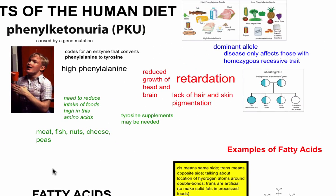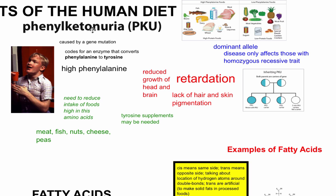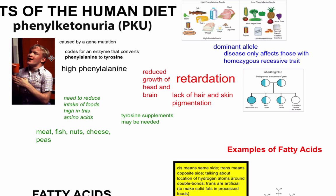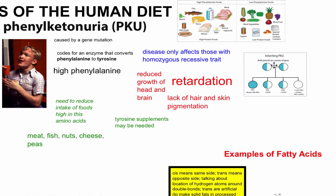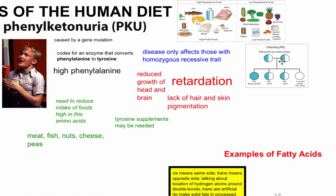Let's look at another condition — PKU, or phenylketonuria. Unlike protein deficiency, this is actually a genetic disease caused by a gene mutation, not simply a result of not eating the right foods. In fact, if you have this disease, you're told to avoid certain foods. PKU only affects those who are homozygous recessive, so if both parents are carriers, there's a one-quarter chance of a child getting this disease.